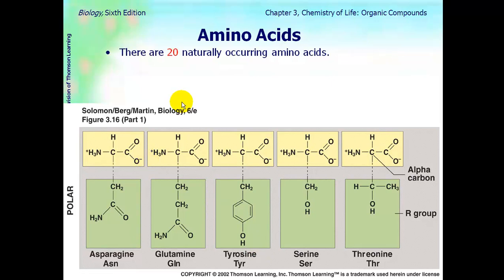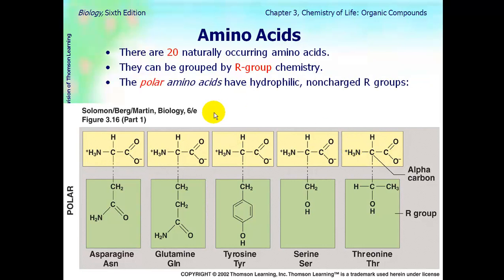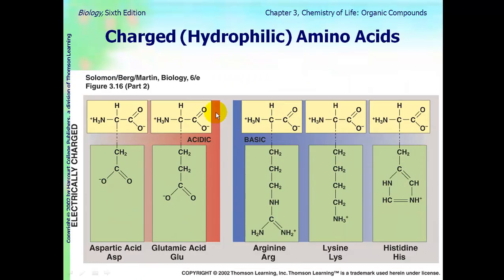Amino acids, there's 20 of them naturally occurring. You do not have to memorize that this is asparagine, and this is glutamine, but you need to recognize that these amino acids are polar. Polar meaning that they have this oxygen here. Oxygen is usually an indicator that the molecule will be polar. And so, that's how they're grouped, is by the chemistry of their R group, which is here in the beige color.